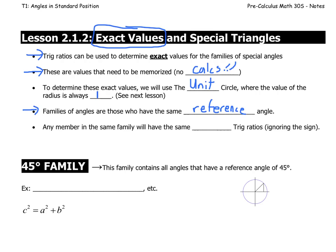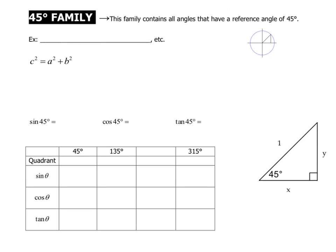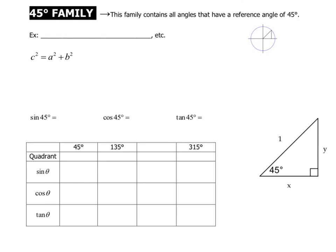Any member of the same family will have the same absolute trig ratio. What that means is, ignoring the sign — ignoring whether or not it's positive or negative — all members of the same family will have the same sine and cosine value. Ladies and gentlemen, it's my pleasure to introduce the 45-degree family. This family contains all angles that have a reference angle of 45 degrees.